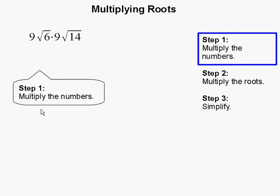Step 1: Multiply the numbers. We are going to start off by multiplying the numbers that are outside the roots, which are 9 and 9, and 9 times 9 gets you 81.